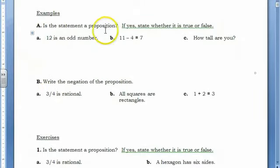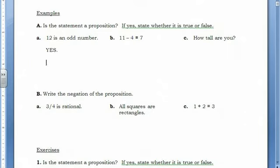The first example says, is this statement a proposition? And if it's a proposition, state whether it is true or false. So, 12 is an odd number. Yes, that is a proposition. Because I can say that that is false.